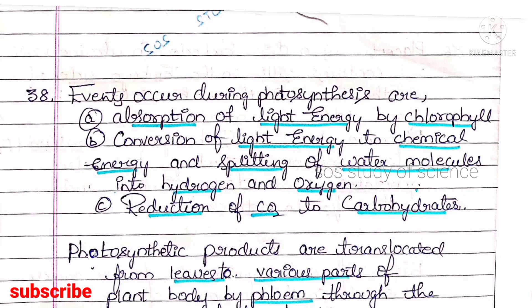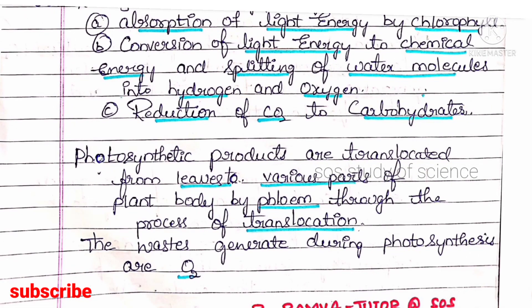Question 38: mention the events that occur during photosynthesis. First: absorption of light energy by chlorophyll. Second: conversion of light energy into chemical energy. Third: splitting of water molecules into hydrogen and oxygen. Fourth: reduction of carbon dioxide to form carbohydrates. Photosynthetic products are translocated from the leaves to various parts of the plant by the phloem — this process is called translocation. The waste generated during photosynthesis is oxygen.